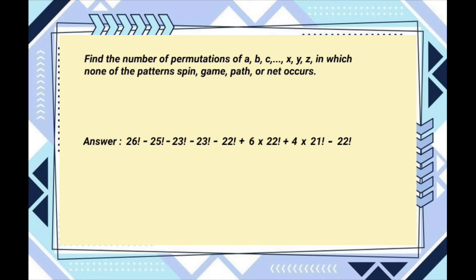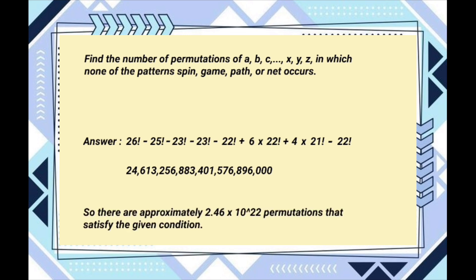Simplifying this expression, we get approximately 24,613,256,883,401,576,896,000 — or approximately 2.46 times 10 to the power of 22 permutations that satisfy the given condition.